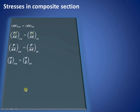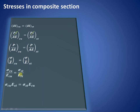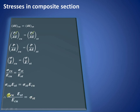Now P/AE is nothing but stress/E, so we have σ/E for copper equal to σ/E for steel. Cross-multiplying, σ_Cu × E_St equals σ_St × E_Cu. From this we can express stress in steel as σ_St = σ_Cu × (E_St / E_Cu), or alternatively express stress in copper in terms of stress in steel.